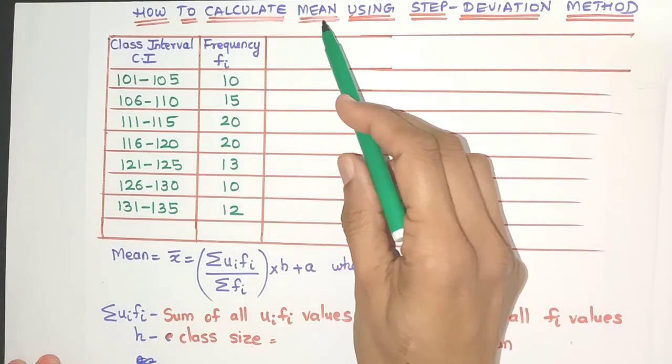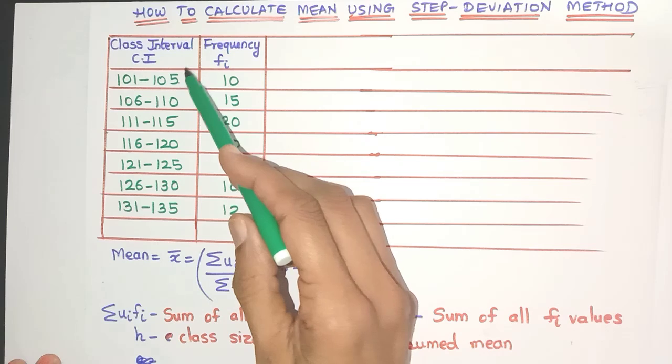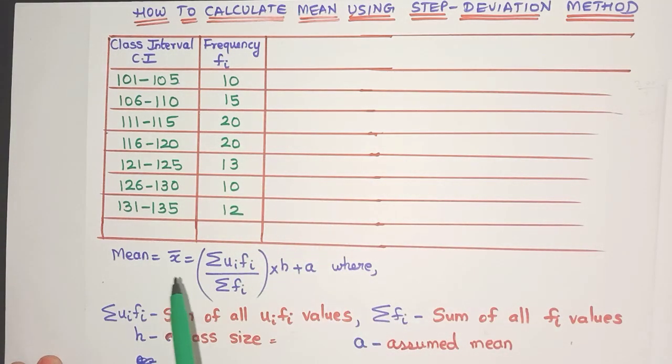Hello everyone, today let's learn how to find mean using the step-deviation method. In this example, this is the class interval column and here is the frequency column. The formula to calculate mean using step deviation is this, but before we can use this formula we need to find a few columns.